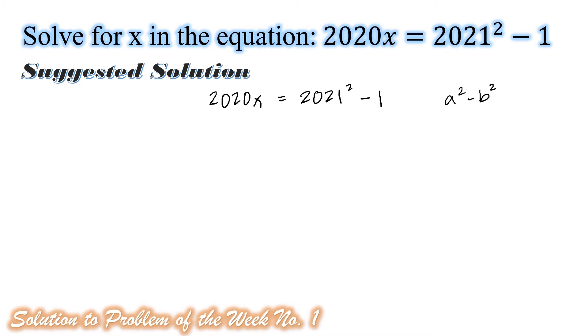We know that a squared minus b squared has factors that is the product of sum and difference a plus b times the quantity a minus b, where a is the square root of a squared and b is the square root of b squared. Hence, in our given equation, we can rewrite the right-hand side in factored form. We have 2021 plus 1 times the quantity 2021 minus 1.